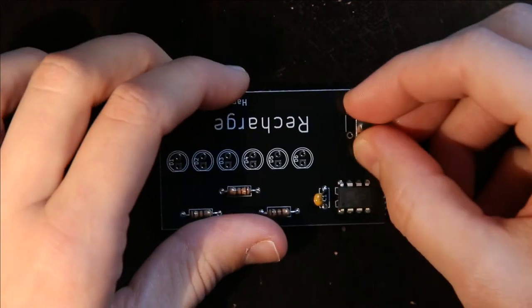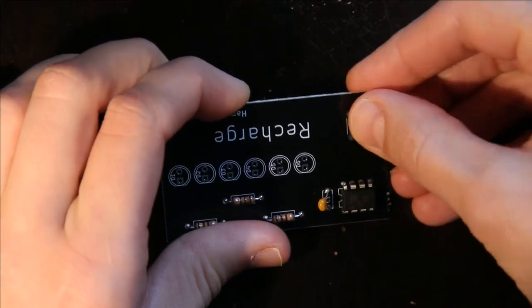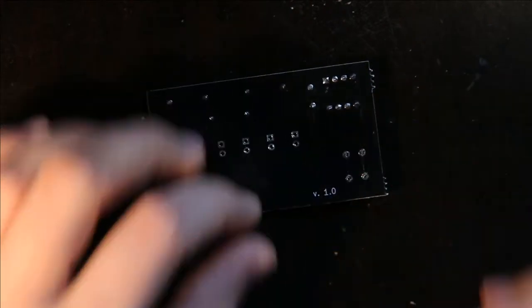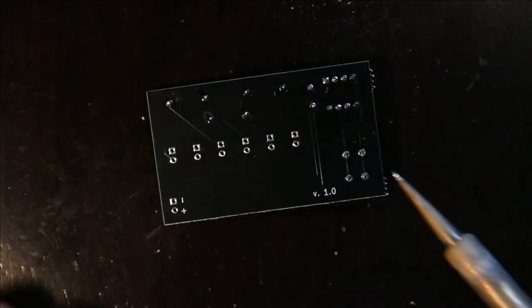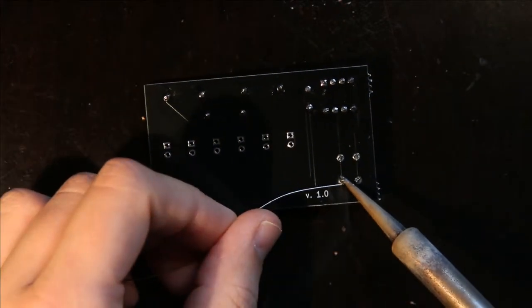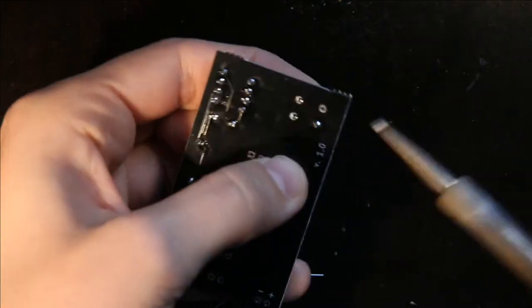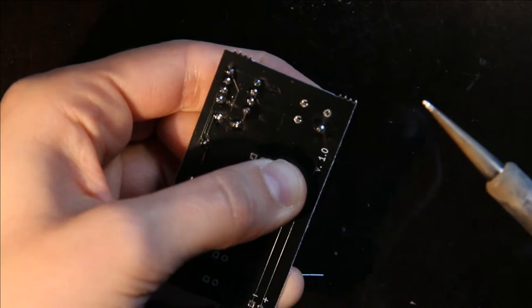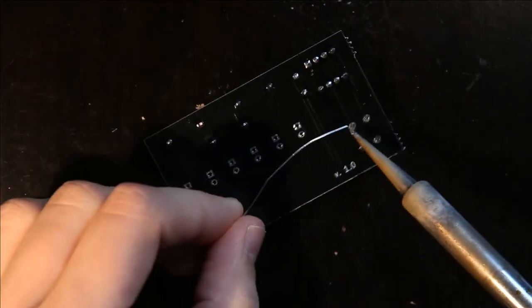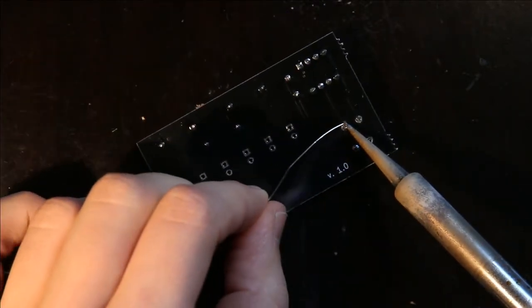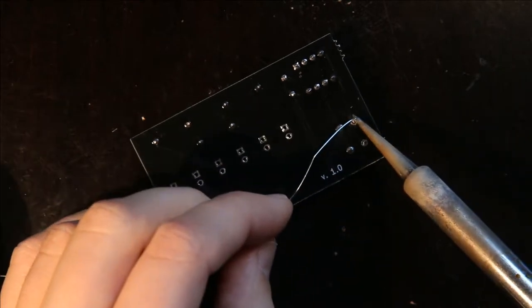Then the button just gets put in here and soldered. So I solder the one pin, check the alignment, push it, solder again, and then solder all the other pins.